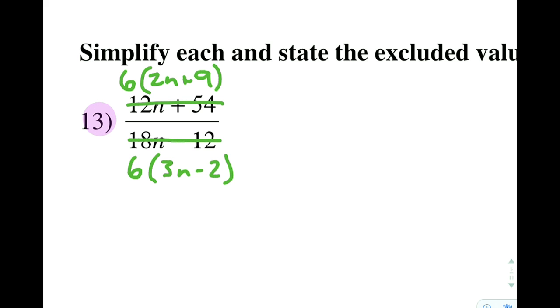Now I very cleanly can see that the 2n plus 9 and the 3n minus 2 are completely different. They will not cancel out to 1, but I do have a 6 and a 6, and since a number outside of parentheses like that is a group in and of itself, we can go ahead and have those cancel out to 1. So our final answer then, if we were to write the simplified fraction, it would be 2n plus 9 over 3n minus 2.